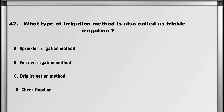Next up is question number 42: What type of irrigation method is also called trickle irrigation? A. Sprinkler irrigation method, B. Furrow irrigation method, C. Drip irrigation method, D. Check flooding. Answer: C. Drip irrigation method.